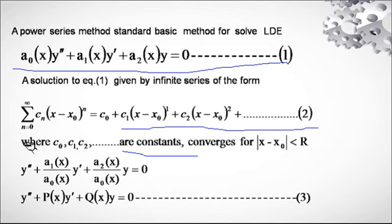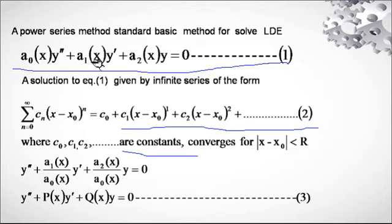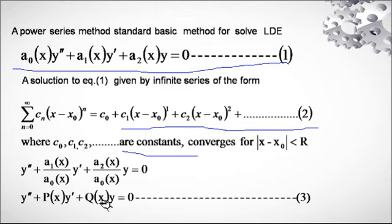We convert this to the standard form y'' + P(x)y' + Q(x)y = 0 by dividing the total equation by a₀(x). Dividing through, we get y'' + [a₁(x)/a₀(x)]y' + [a₂(x)/a₀(x)]y = 0, where P(x) = a₁(x)/a₀(x) and Q(x) = a₂(x)/a₀(x).